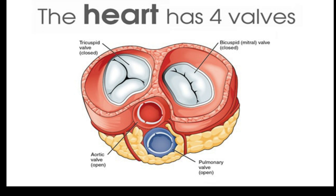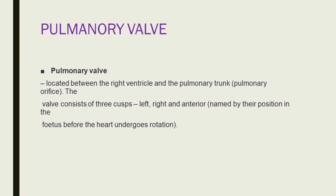The semilunar valves are located between the ventricles and the outflow vessels. They close at the beginning of ventricular relaxation (diastole), producing the second heart sound. There are two semilunar valves: the pulmonary valve and the aortic valve. The pulmonary valve is located between the right ventricle and the pulmonary trunk, and consists of three cusps — left, right, and anterior — named by their position in the fetus before the heart undergoes rotation.